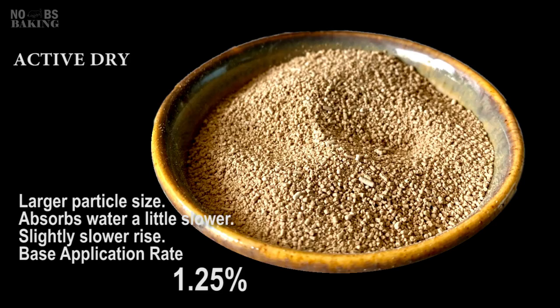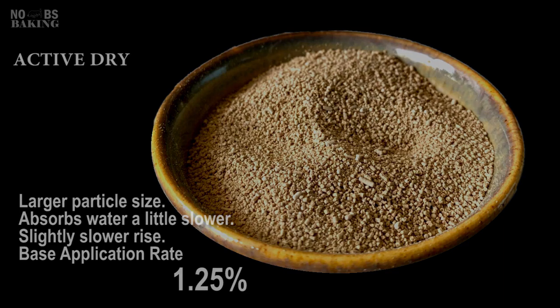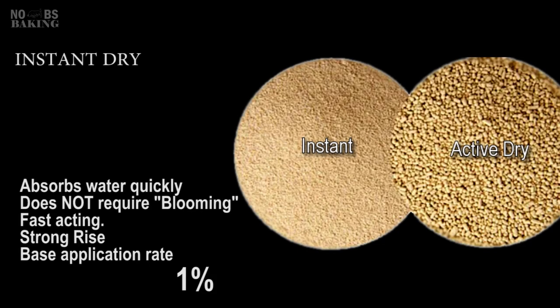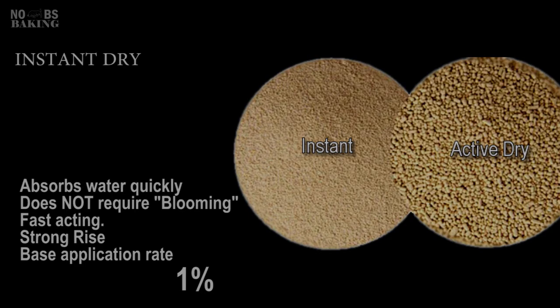Active dry yeast remains a product that is recommended to bloom in advance, as it takes up water slower and can ultimately extend your rise times a bit as it gets into gear. Even with pre-activation, this type of yeast generally requires a touch more than instant, and the recommended base starting point is 1.25%. Instant dry yeast was created to add directly to the dough with no blooming — it absorbs water faster and gets rocking quickly. Even active dry doesn't actually require pre-blooming with a minor kick-up of around 25% above instant; it generally does a good job.